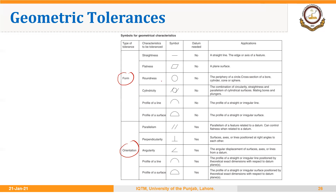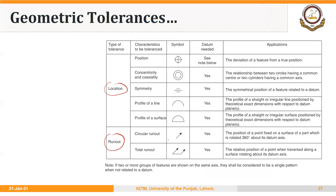One important point is that geometric features of form do not require any datum — a datum being a reference surface or reference line. But geometric features of orientation do require a datum. For example, if we are talking about the parallelism of a surface, we need to specify the datum. The same applies to perpendicularity: we need to specify the reference from which perpendicularity will be measured, and the same is true for angularity or profile of a line or surface.